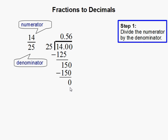Now that we don't have any remainder, we can stop here. So when converting 14 over 25 into a decimal, we simply divide and we get 0.56. And this completes our problem.